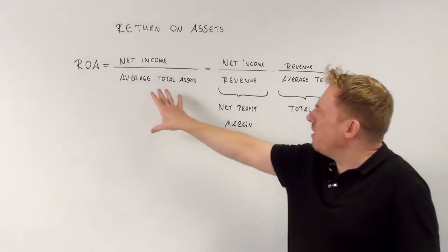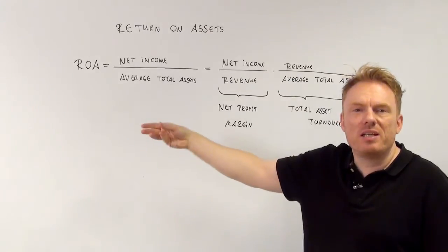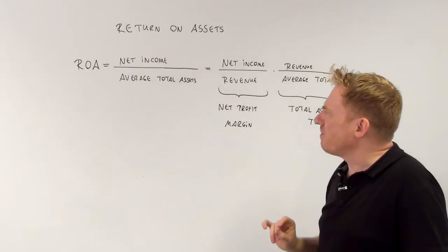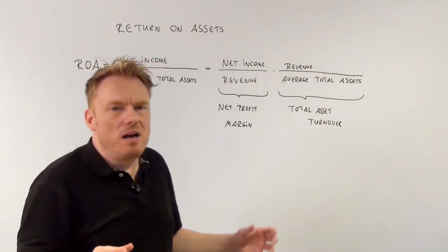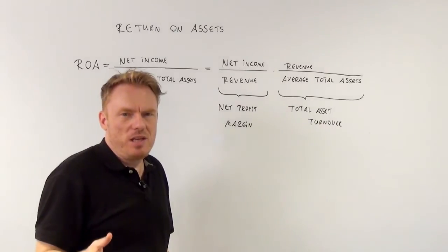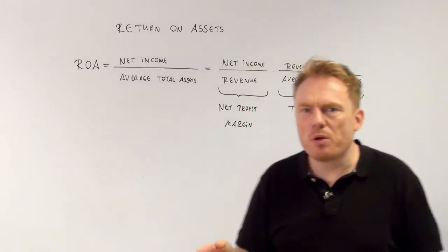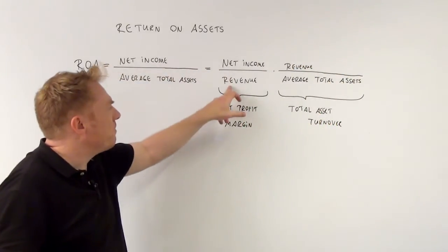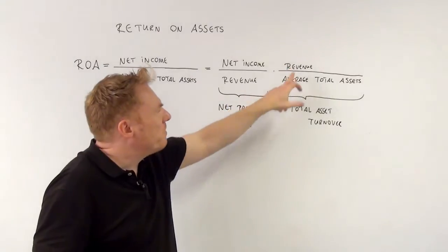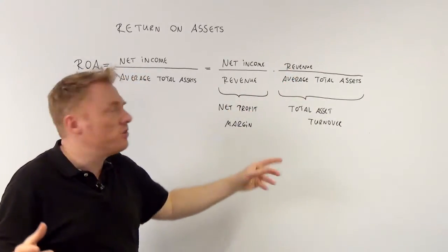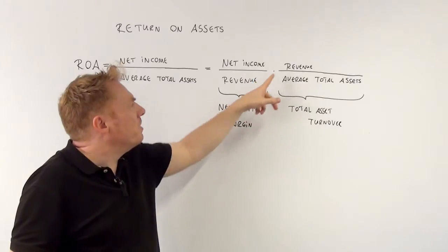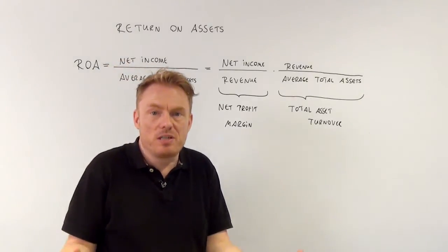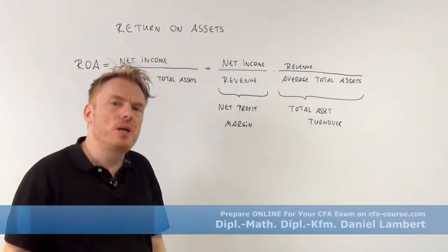Now it's very important to understand and look at it a different way. It's not only this fraction — there is also a possibility of expanding this fraction. If we multiply the numerator and denominator with revenue, we get net income divided by revenue, and we get revenue divided by average total assets. As you can see, revenue is just the way of expanding the fraction — it's no different result at all, just a different way of looking at it.